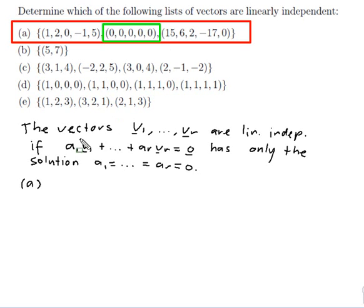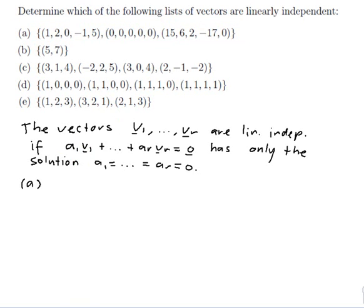Yeah, because if this one here, this v1 is the zero vector, then I can just choose A1 to be 5 or 7 or minus 3, and all the rest to be zero and I've got a non-zero solution. So that makes it not linearly independent. Okay, so that answers that one. Linearly dependent since one is the zero vector.